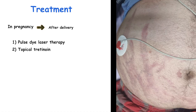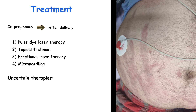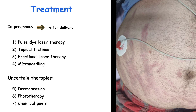Preferred initial treatments for stria alba are fractional laser therapy and microneedling. Many practitioners combine microneedling with radiofrequency to boost efficacy. Other interventions that may improve stria distensae based on limited studies include dermabrasion, phototherapy, and chemical peels, but there is not enough data yet to prescribe these methods routinely.